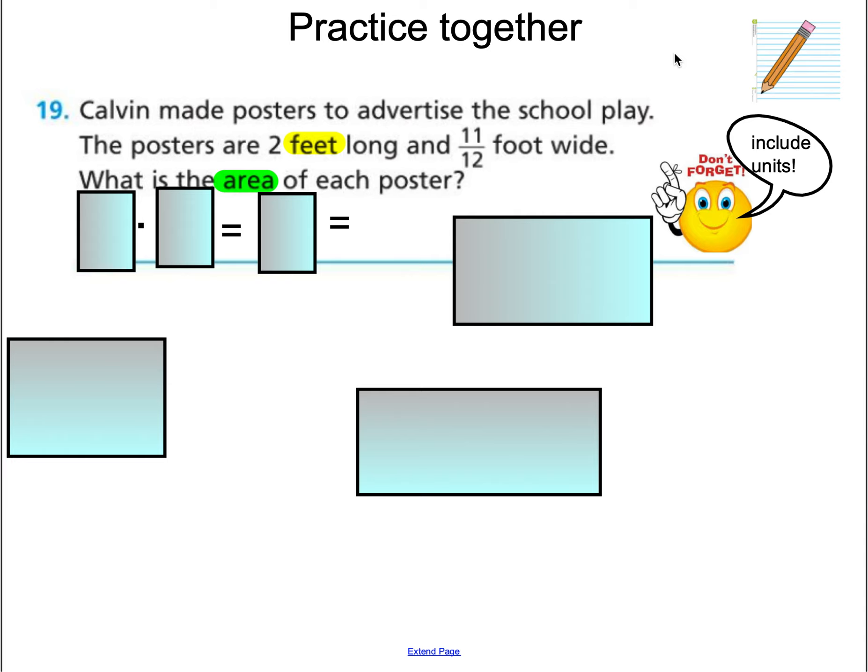So have this equation ready to write out. But first, let's read it. Calvin made posters to advertise the school play. The posters are 2 feet long and 11/12 of a foot wide. What is the area of each poster?